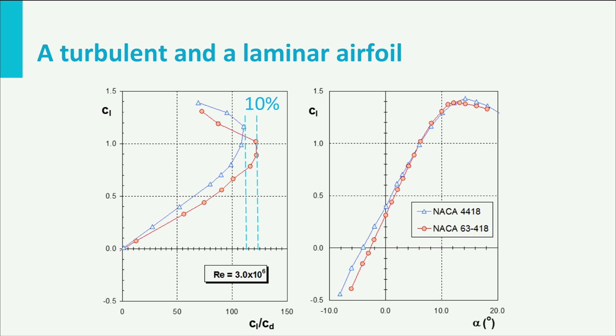If we would compare an 18% thick member of the 64 series, which has more laminar flow over the upper surface than the 63 series airfoil shown here, the difference would even be larger.